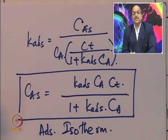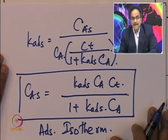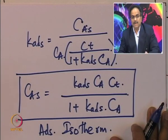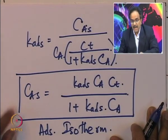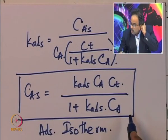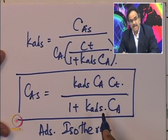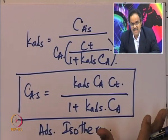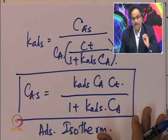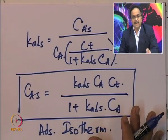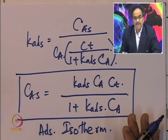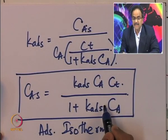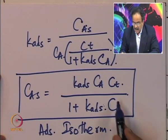How do we know this adsorption isotherm is correct? It is based on the assumption that A adsorbs on a single site following a reversible reaction between A and S. If that assumption is correct, this expression holds. To verify, we do experiments in the laboratory: take A in an inert, contact it with catalyst, generate data, and see whether the data fits this equation. If it fits well, the assumption and isotherm are confirmed.